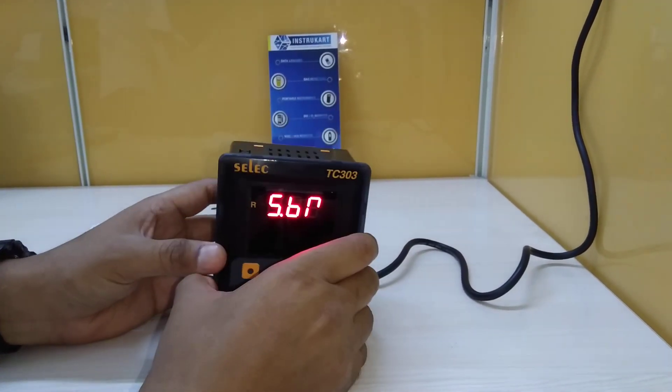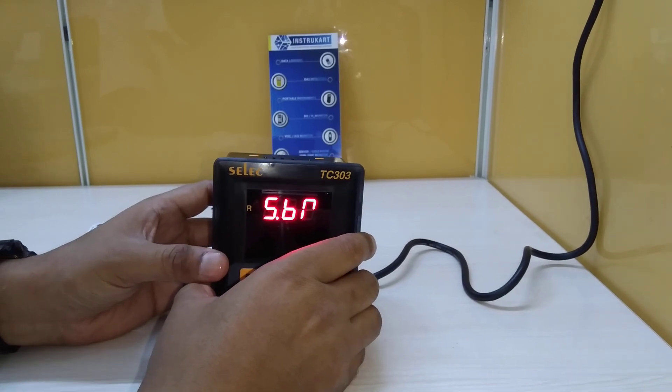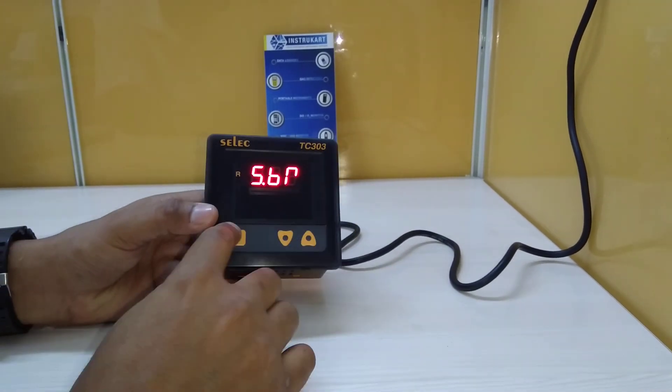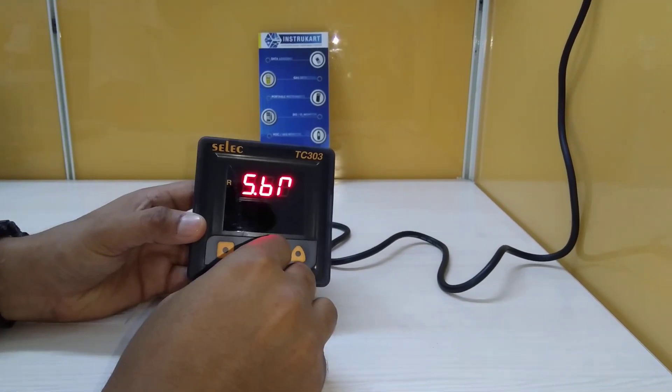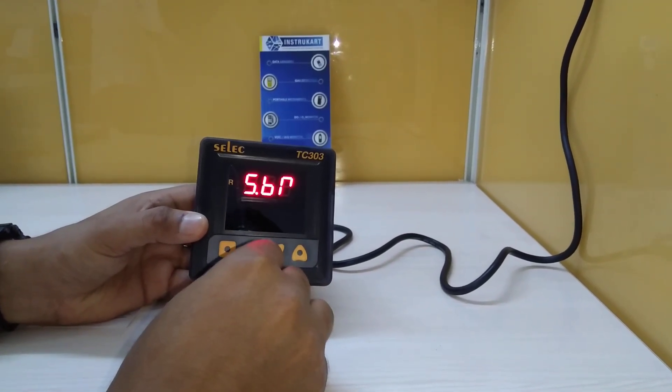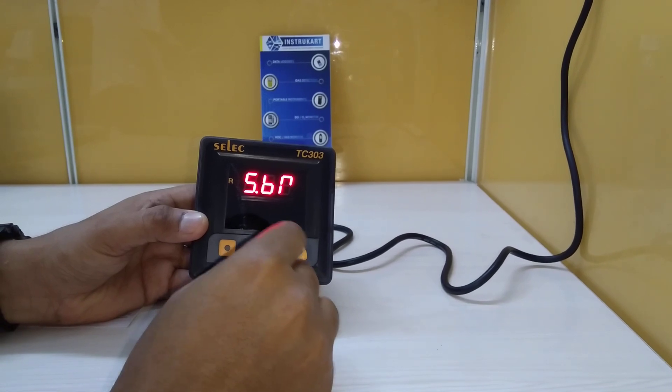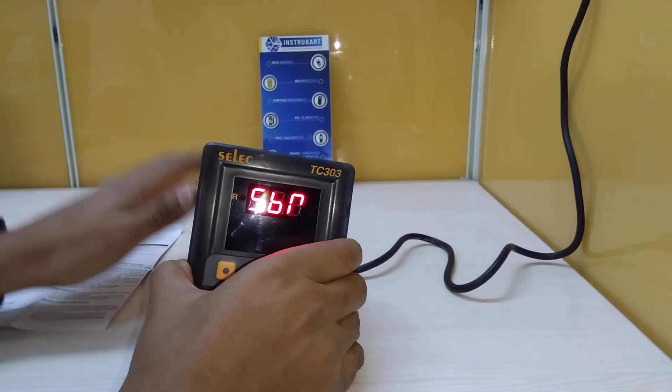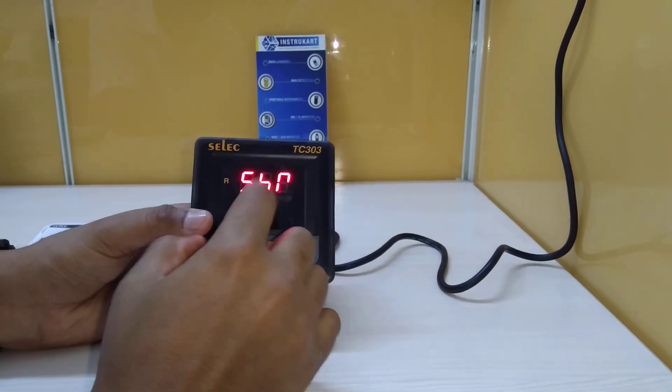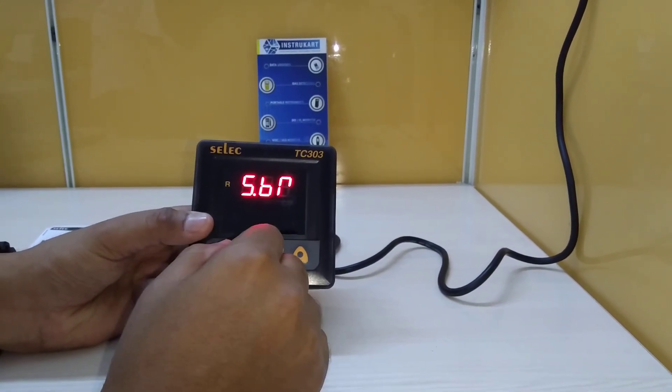It has three keys for digital setting and can take input signals from thermocouples JKT RS and also RTD PT-100. The temperature unit is selectable between Fahrenheit and Celsius.